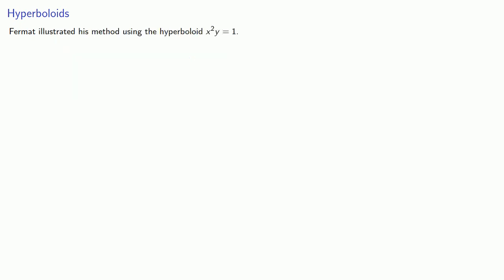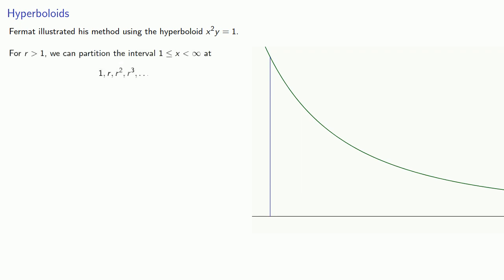So Fermat illustrated his method using the hyperboloid x squared y equals 1. So let's take r greater than 1. For r greater than 1, we can partition the interval from 1 to infinity at the points 1, r, r squared, r cubed, and so on.